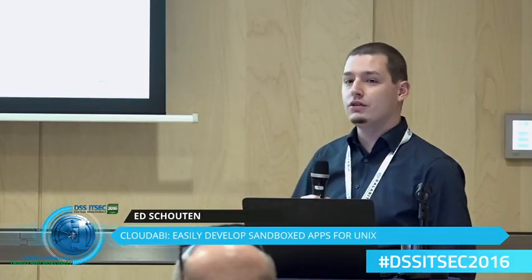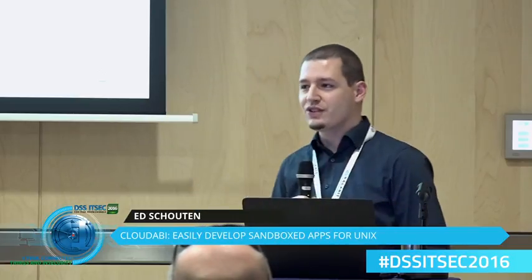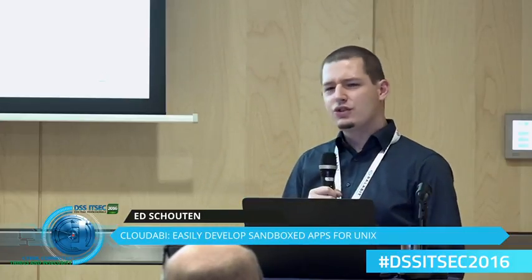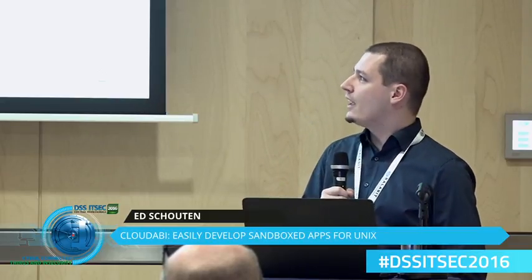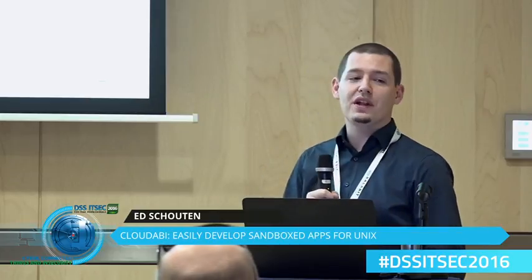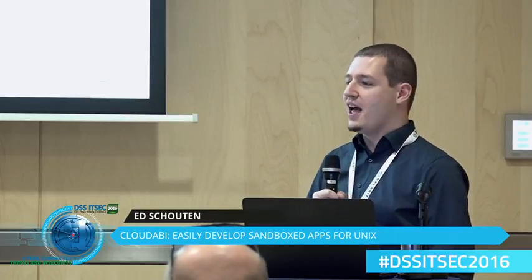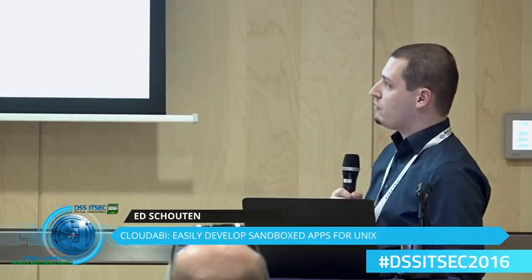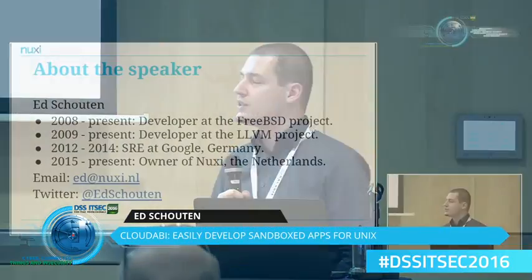A small introduction: my name is Ed Schouten, I'm an open source activist from the Netherlands. I started using Linux back in 2002-2003 and switched over to using FreeBSD later on. In 2008 I was sending so many patches to FreeBSD that I eventually gained SVN — CVS access back then — and I've been a developer ever since.